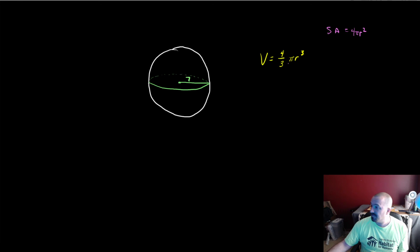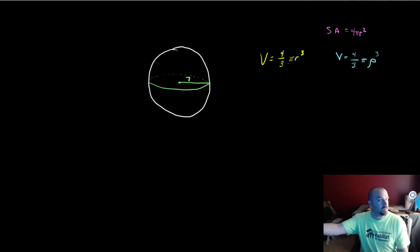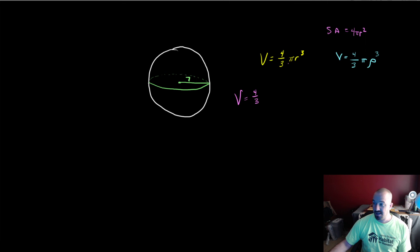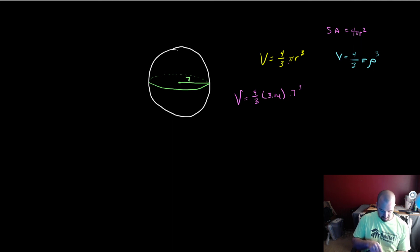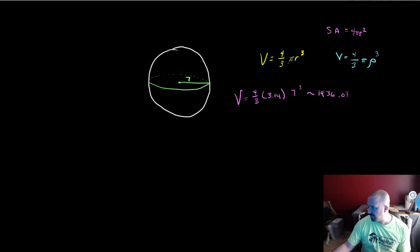The formula is typically given as V = 4/3 pi r cubed. If you're more advanced, rho is a favored three-dimensional radius symbol, so you might also see it as 4/3 pi rho cubed. We just plug things in: our volume is 4/3 times 3.14 times 7 cubed, which comes out to roughly 1436.03 cubic units.